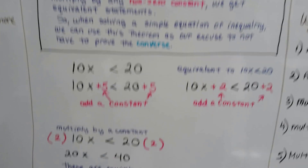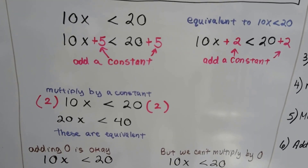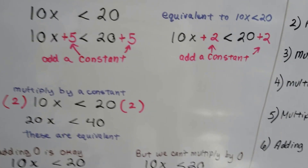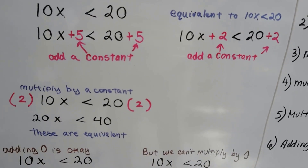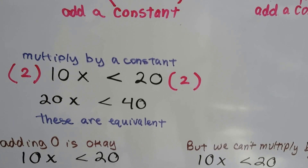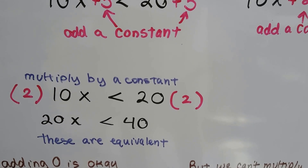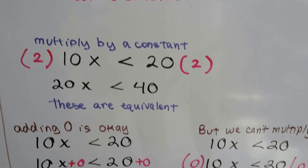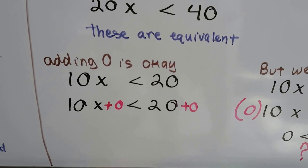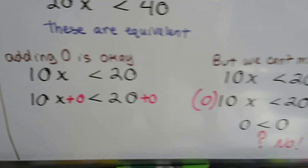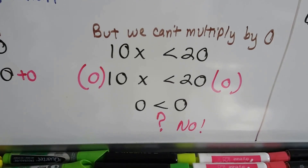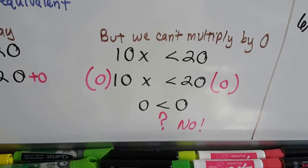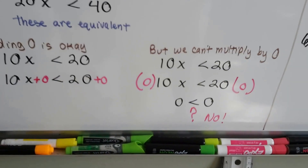For example, if we have 10x < 20, it's equivalent if we add a constant of 5 or 2 to each side — it's still equivalent to 10x < 20. And we can multiply by a constant as long as it's not zero. So if we multiply both sides by 2, it's still an equivalent statement: 10x < 20 is equivalent to 20x < 40. Adding zero to each side is okay and makes an equivalent statement, but when we multiply by zero, for an inequality we end up with 0 < 0, which is not true. So adding zero is okay, but multiplying by zero is not.